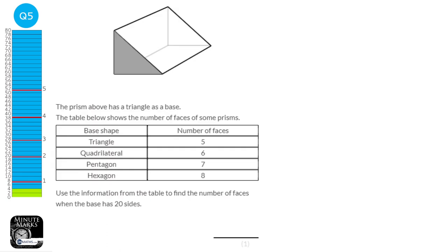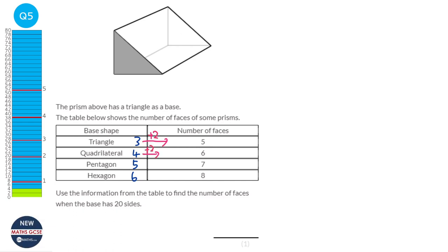Something to realise in this table is that a triangle has three sides, quadrilateral 4, pentagon 5, and hexagon 6. And that number is just two less than the number of faces. So basically, if you've got the number of sides, you add 2. So 4 plus 2 is 6, 5 plus 2 is 7, and 6 plus 2 is 8. So if we've got 20 sides and we just do the same thing — adding 2 — then we should have 22 faces. So our answer is 22.